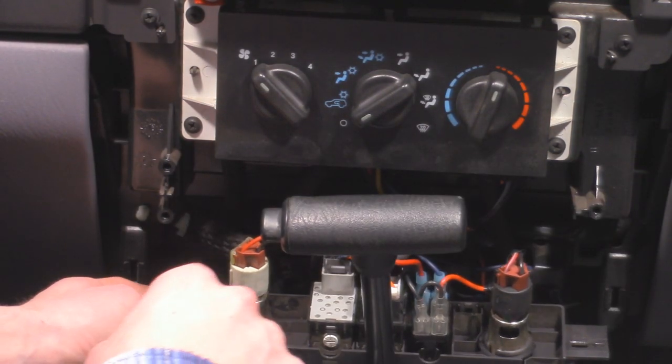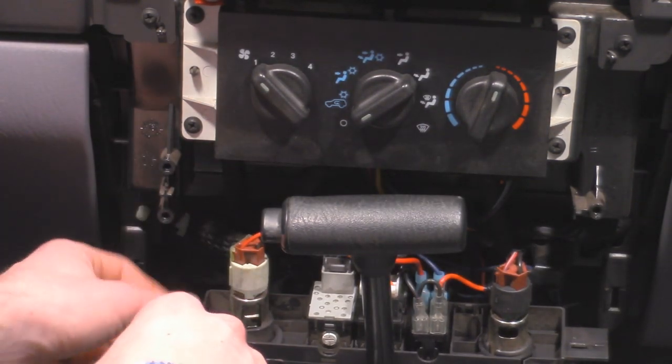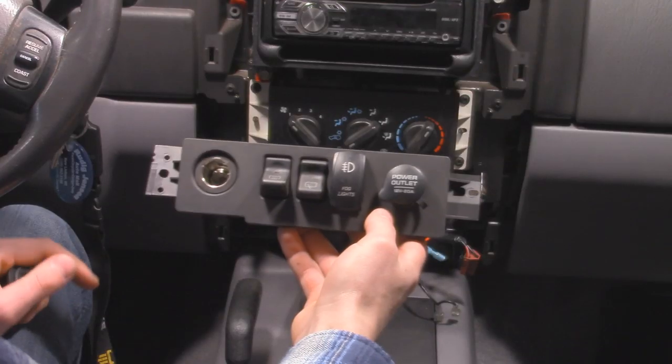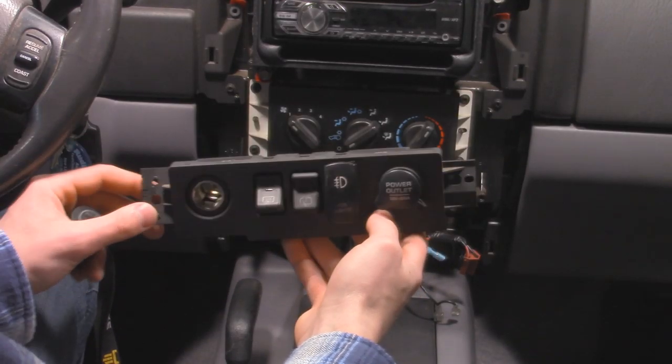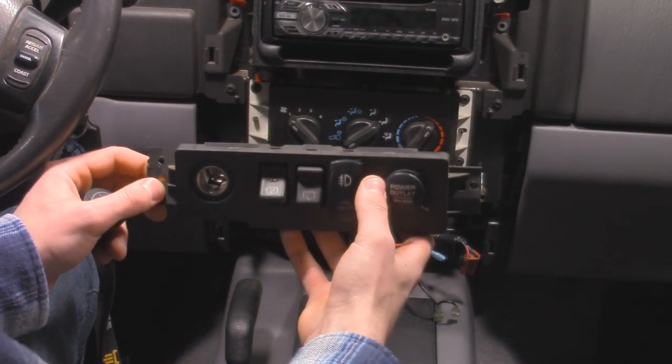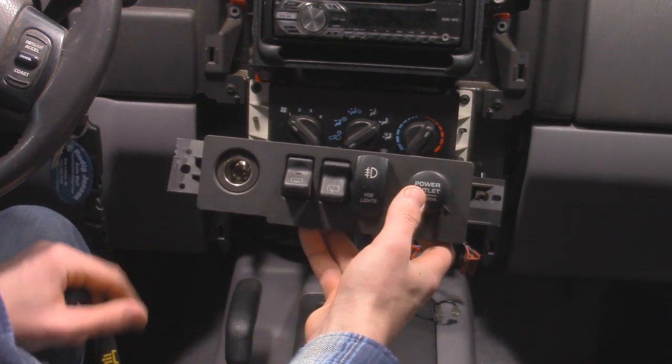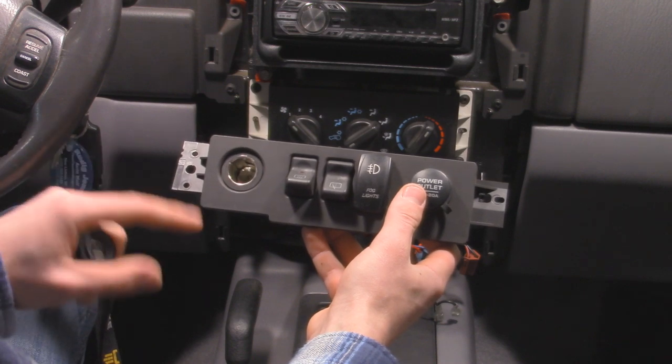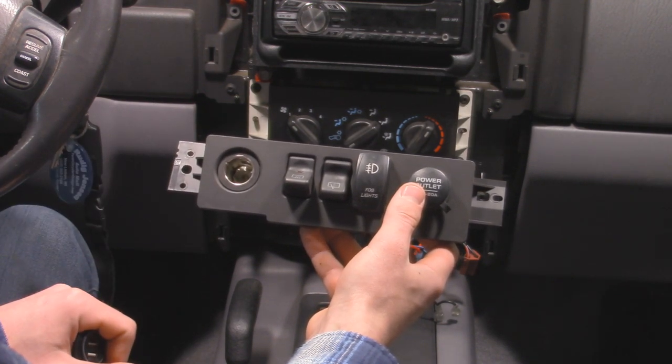And now with that pulled out we can take all of our electrical connections that go to all of our switches and disconnect them. All right, so with our panel out it's going to be a lot easier to work on and the one we're going to be replacing today is the left-hand side cigarette lighter and the reason why is because that's always on when the ignition is on.